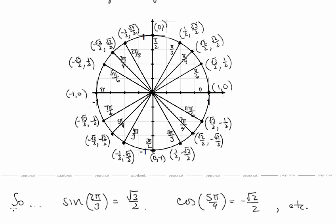A couple more examples: sine of 2π/3 was our original question — that's the y coordinate at 2π/3, which is positive radical 3 over 2. And cosine of 5π/4: 5π/4 is in the third quadrant, and cosine is the x coordinate there, which is negative radical 2 over 2. Once we determined the first-quadrant values, we used symmetry to get them all around the circle, giving us trig evaluations at all the angles we're interested in.